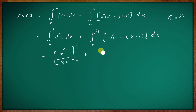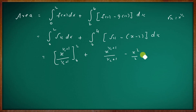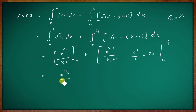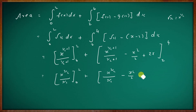This gives x raised to 3 by 2 divided by 3 by 2, from 0 to 2. Plus the integral from 2 to 4 of root x minus x squared by 2 plus 2x. That is x raised to 3 by 2 divided by 3 by 2, minus x squared by 2, plus 2x, evaluated from 2 to 4.